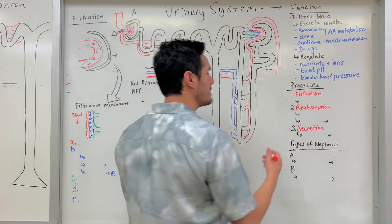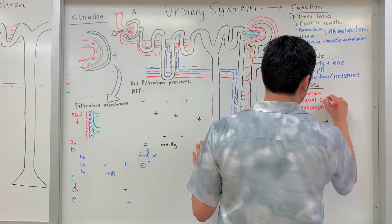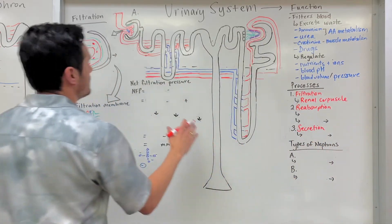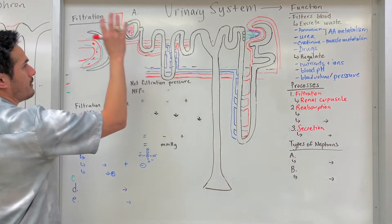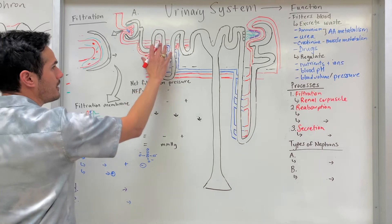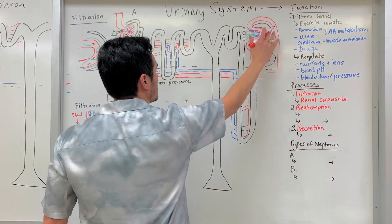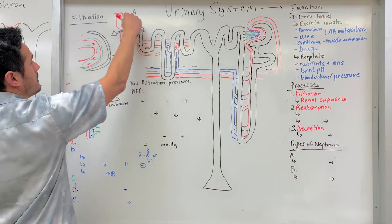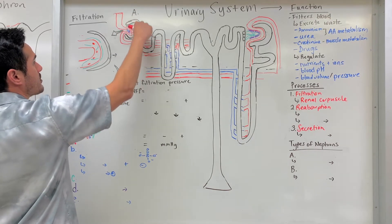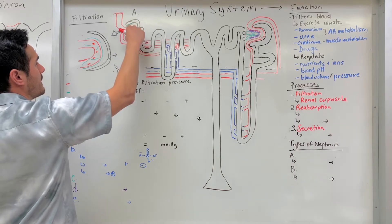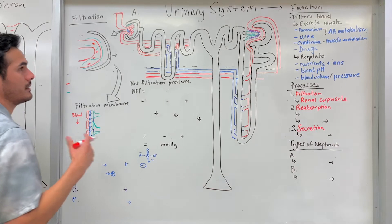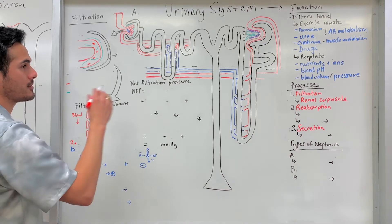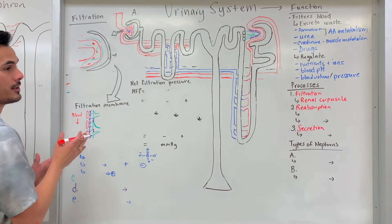Filtration occurs within what's known as the renal corpuscle. What I have drawn on the board represents two types of nephrons: a cortical nephron and a juxtamedullary nephron. The renal corpuscle includes Bowman's capsule on the outside, and the glomerulus on the inside. Make sure to watch the anatomy of the kidney lecture first before going over this material.